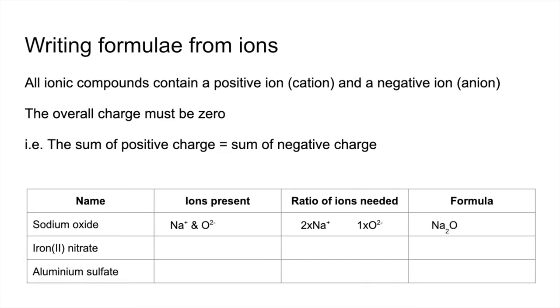Iron 2 nitrate now. So the Roman 2 signifies that we've got Fe2 plus present. Nitrate, NO3, 1 minus. So again, one of each won't work. We need two nitrate ions for every Fe2 plus ion. Which means the formula is written like this. So you can see a bracket being used there for the polyatomic ion. So we need two of those for every Fe2 plus ion.